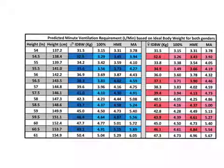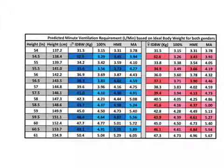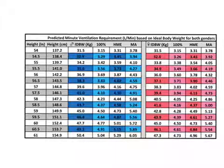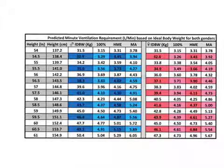Predicting the minute ventilation requirement based on ideal body weight has been adopted from Radford's Nanogram. This table provides three calculations: the 100% minute ventilation requirement, the additional minute ventilation requirement if using a HME or heat moisture exchanger, and the minute ventilation requirement for somebody with metabolic acidosis.